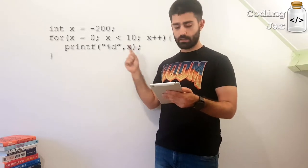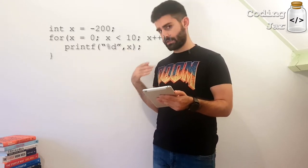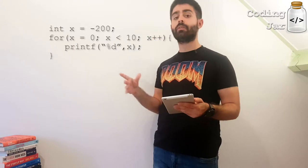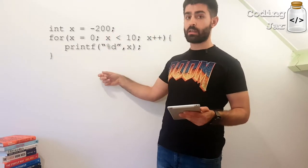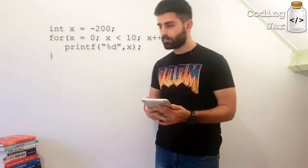The idea is that you would read this statement as follows. For x equals 0, and while x is less than 10, execute the block of code, and after each time you finish that block of code, increase x by 1.